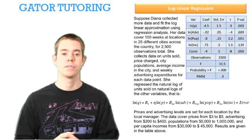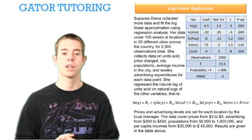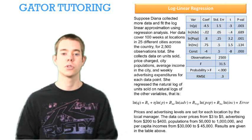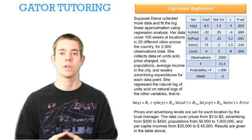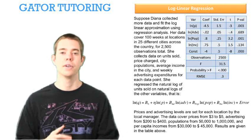This last paragraph talks about the data covering prices from $3 to $5, advertising from $200 to $400, populations from 50,000 to 1,000,000, and per capita incomes from $30,000 to $45,000. What's important about that is we can't extrapolate out of range.